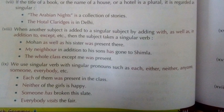Rule eight: when another subject is added to a singular subject using 'with', 'as well as', 'in addition to', or 'except', the main subject is still treated as singular. 'Mohan as well as his sister' — it looks like two people, but since we used 'as well as' instead of 'and', it remains singular. If 'and' had been used, it would be plural. Examples: 'Mohan as well as his sisters was present.' 'My neighbor in addition to his son has gone.' 'The whole class except me was present.'